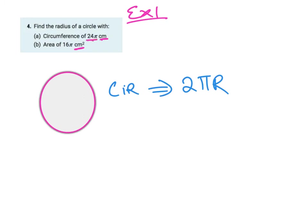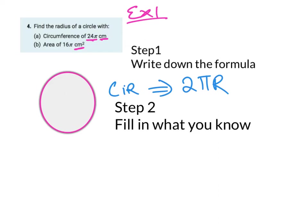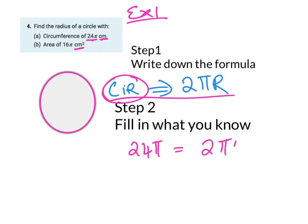Following our two steps: step one, write down the formula — circumference equals 2πr. Step two, fill in what you know. We're told the circumference is 24π, so: 24π = 2πr. We want r on its own, so we need to rearrange. We'll do a little algebra here.